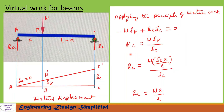From this equation we can write Rc equals W times delta_b divided by delta_c. We have seen that delta_b equals delta_c times a over L. After substituting and simplifying, we get the reaction at C: Rc equals W times a over L.